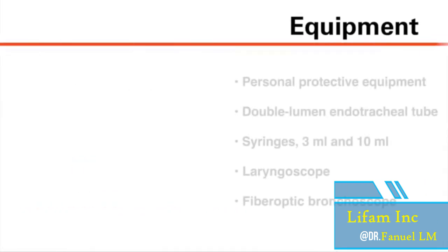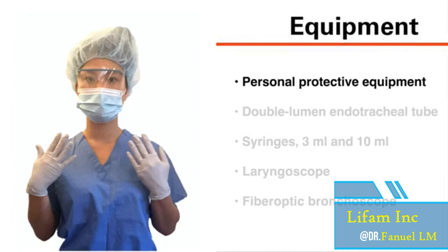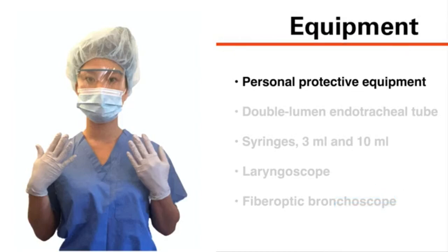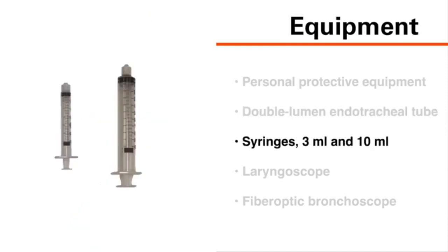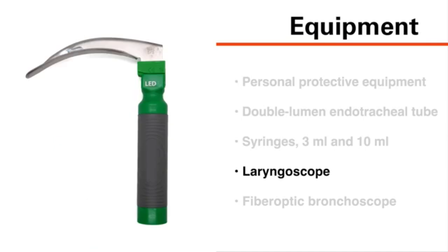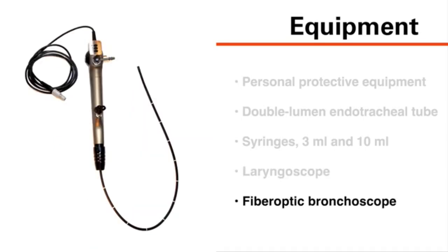To perform the procedure, you will need the following equipment: personal protective equipment as required by your institution for the clinical scenario, a double-lumen endotracheal tube, 3 mL and 10 mL syringes, a laryngoscope, and a fiber-optic bronchoscope.